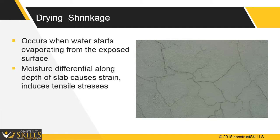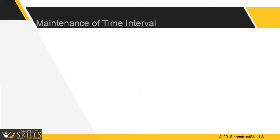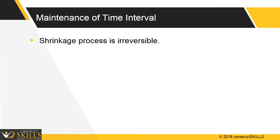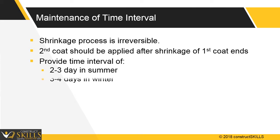The moisture differential along the depth of the slab causes strain, induces tension, and results in drying shrinkage. It is necessary to maintain a time interval to prevent drying shrinkage. The second coat should be applied after shrinkage of the first coat ends. Preferably, provide a time interval of 2 to 3 days in summer and 4 days in winter, as the setting of mortar will be rapid in summer and slower in winter.